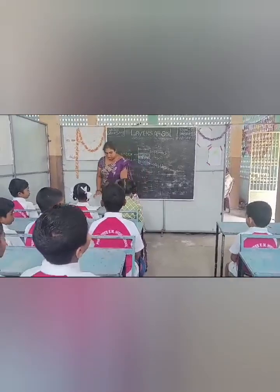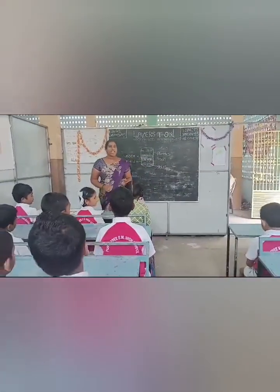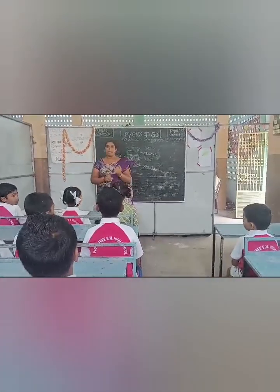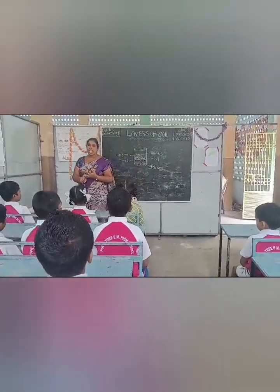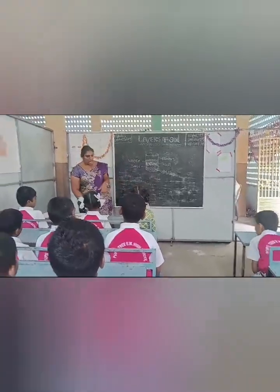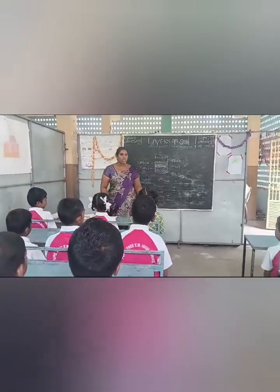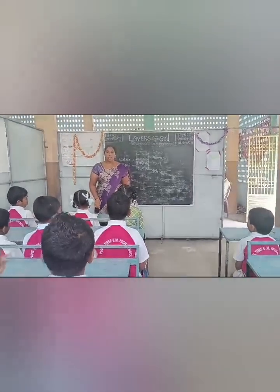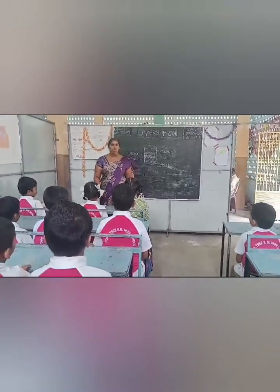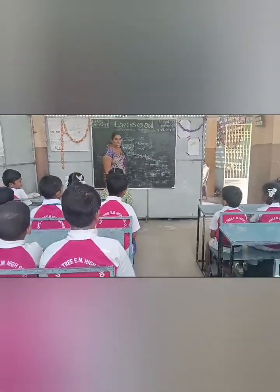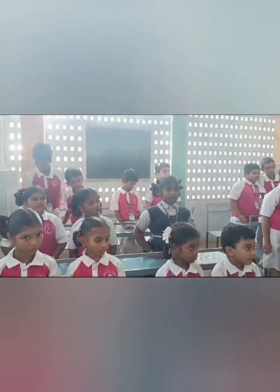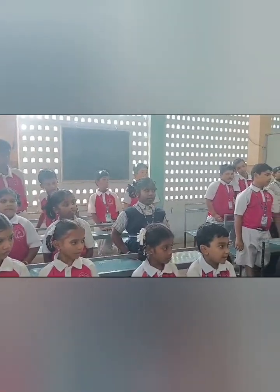Now five layers is there. First layer is pebbles, second layer is sand, third layer is clay soil, fourth layer is water, and fifth layer is humus. First layer is pebbles.